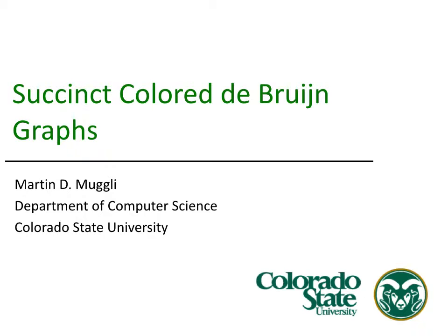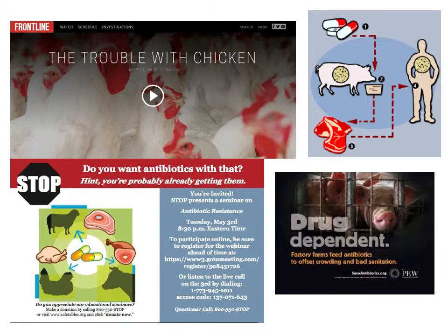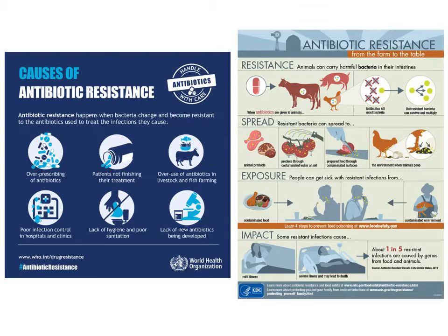First we'll begin with a motivating biological question being studied by biologists here at CSU. Antibiotic resistance is receiving a lot of media attention because it is seen as a serious public health threat. For example, infections from a resistant form of staph known as MRSA caused close to 10,000 deaths in the US in 2011. The use of antibiotics in food production is often cited as one of the key causes of resistant infections in humans, as shown in these infograms from the WHO and CDC.